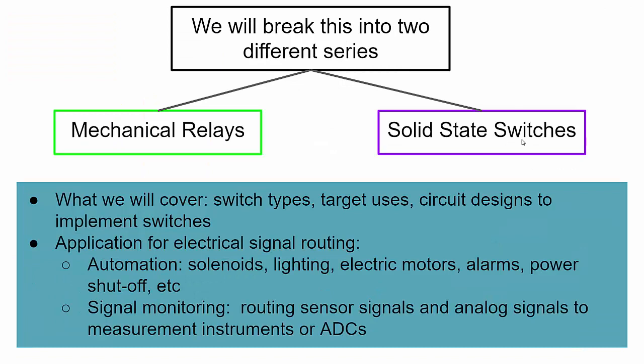I'm going to do two series here. I'll first start with mechanical relays and then go on to solid-state switches - two parts for mechanical relays and maybe two or three parts for solid-state switches. I wanted to cover all the way to controlling signal routing in your design using electrical signals. I'm not talking about manual switches here - these are switches we can control with electrical signals. I'll cover different types, the pros and cons, good applications for certain types, and the circuit designs to implement them, because typically you can't just use them out of the box.